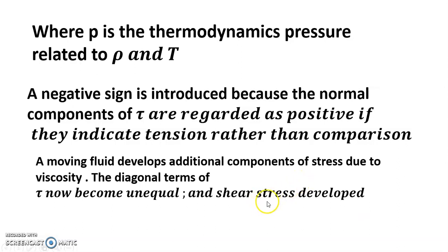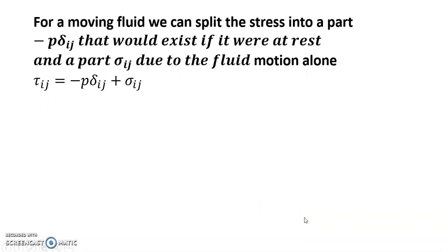The diagonal terms of tau now become unequal and shear stress develops. For a moving fluid, we can split the stress into a part minus p delta_ij that would exist if it were at rest, and a part sigma_ij due to the fluid motion alone.